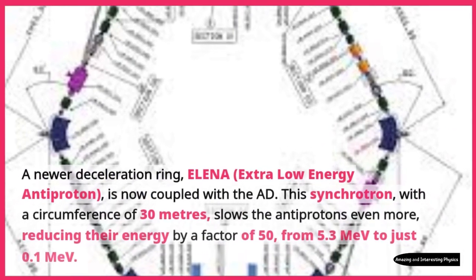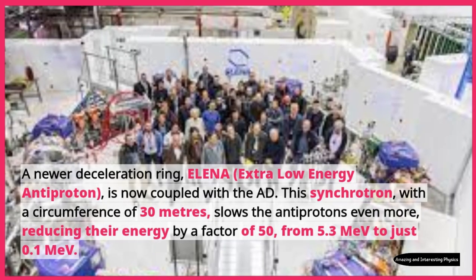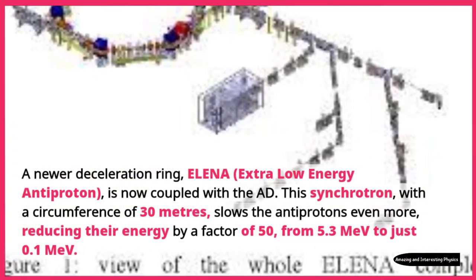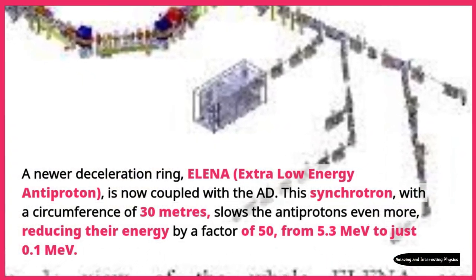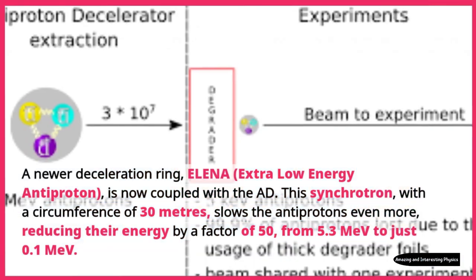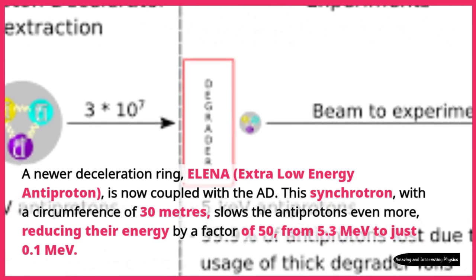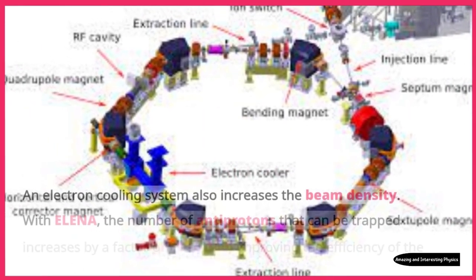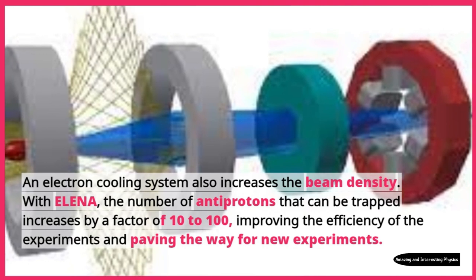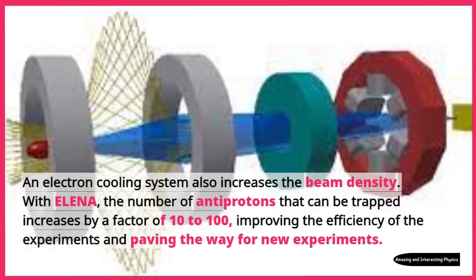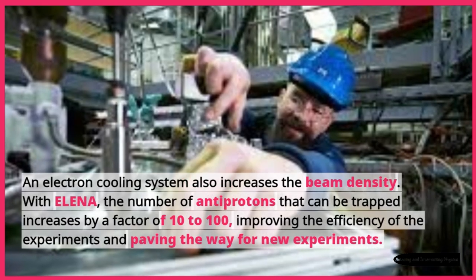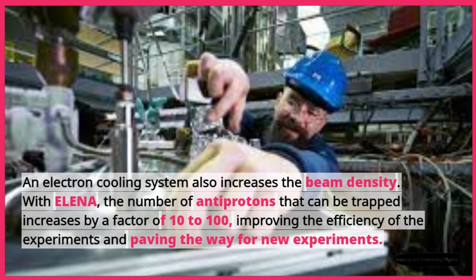A newer deceleration ring, ELENA — extra low energy antiproton — is now coupled with the AD. This synchrotron, with a circumference of 30 meters, slows the antiprotons even more, reducing their energy by a factor of 50, from 5.3 MeV to just 0.1 MeV. An electron cooling system also increases the beam density. With ELENA, the number of antiprotons that can be trapped increases by a factor of 10 to 100, improving the efficiency of the experiments and paving the way for new experiments.